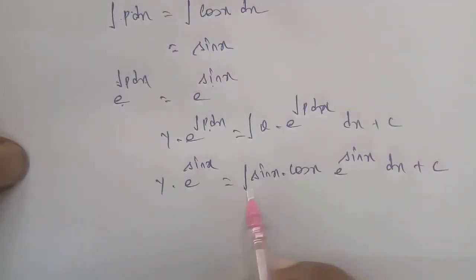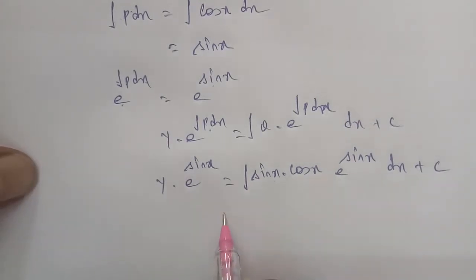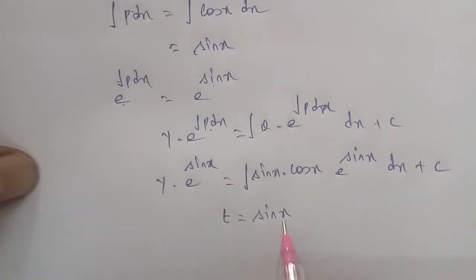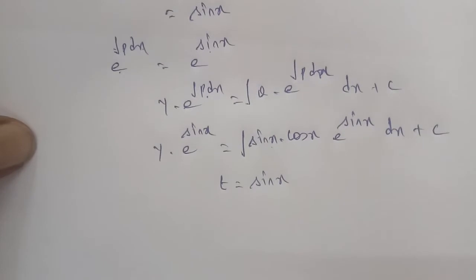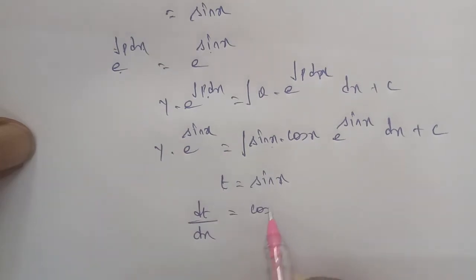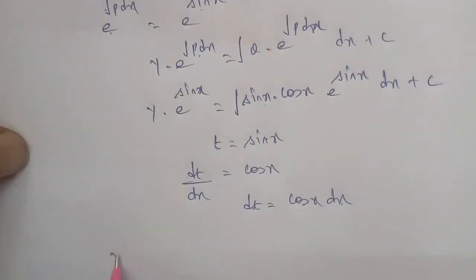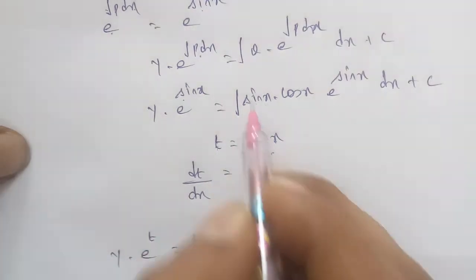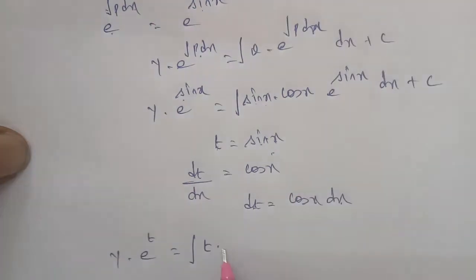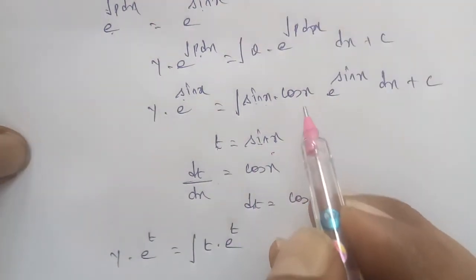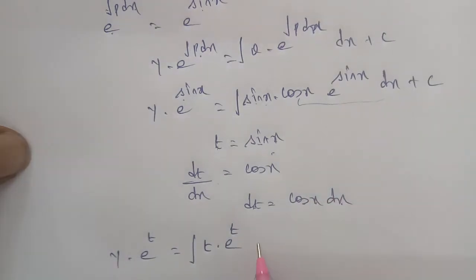Now apply substitution: let t equal to sin x. Differentiating, dt is equal to cos x dx. So cos x dx is replaced by dt. The integral becomes integral of t into e power of t dt.